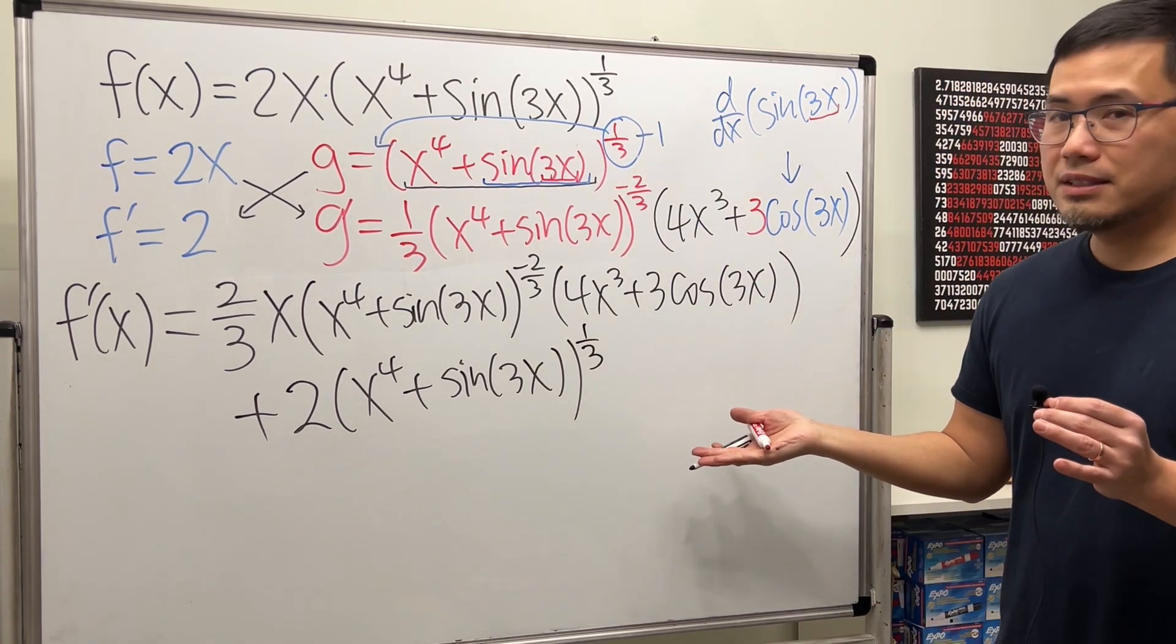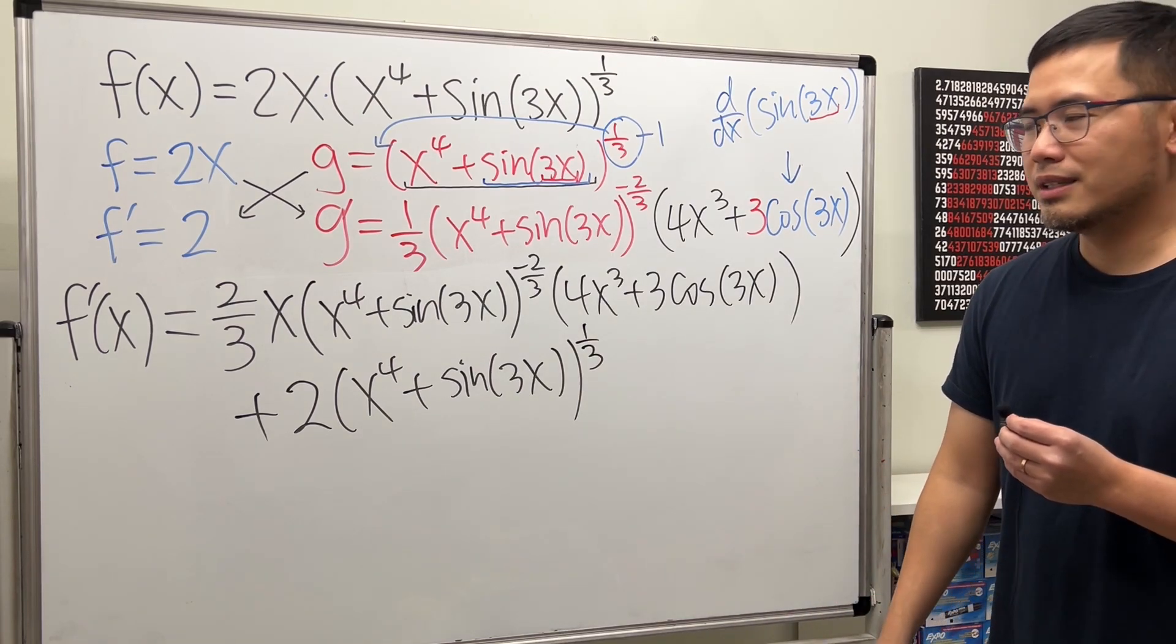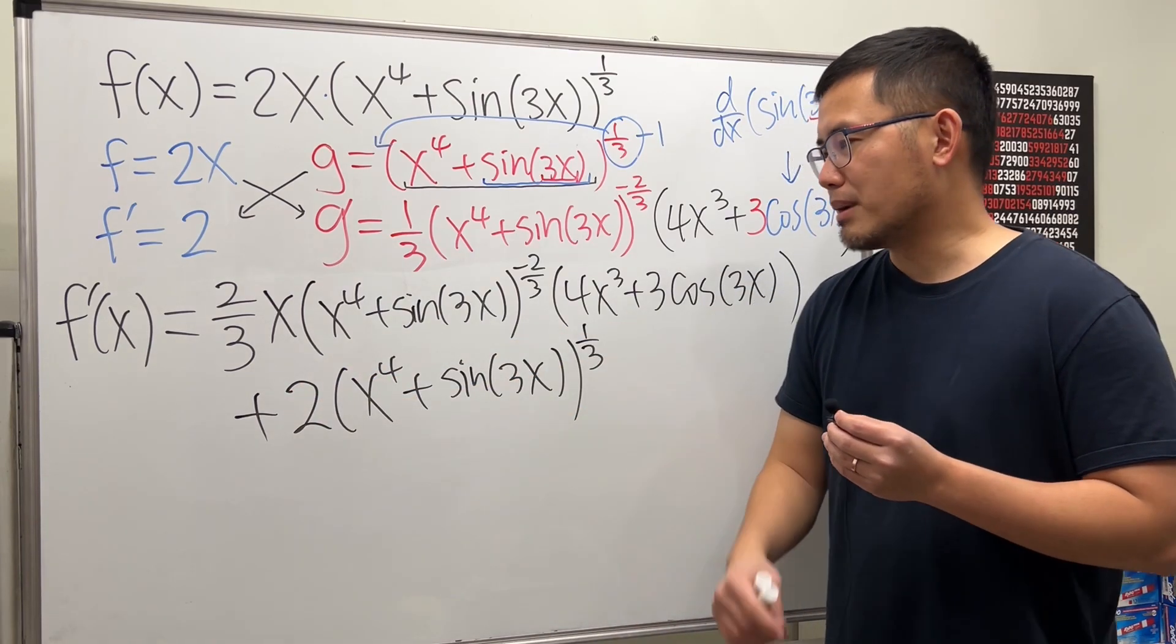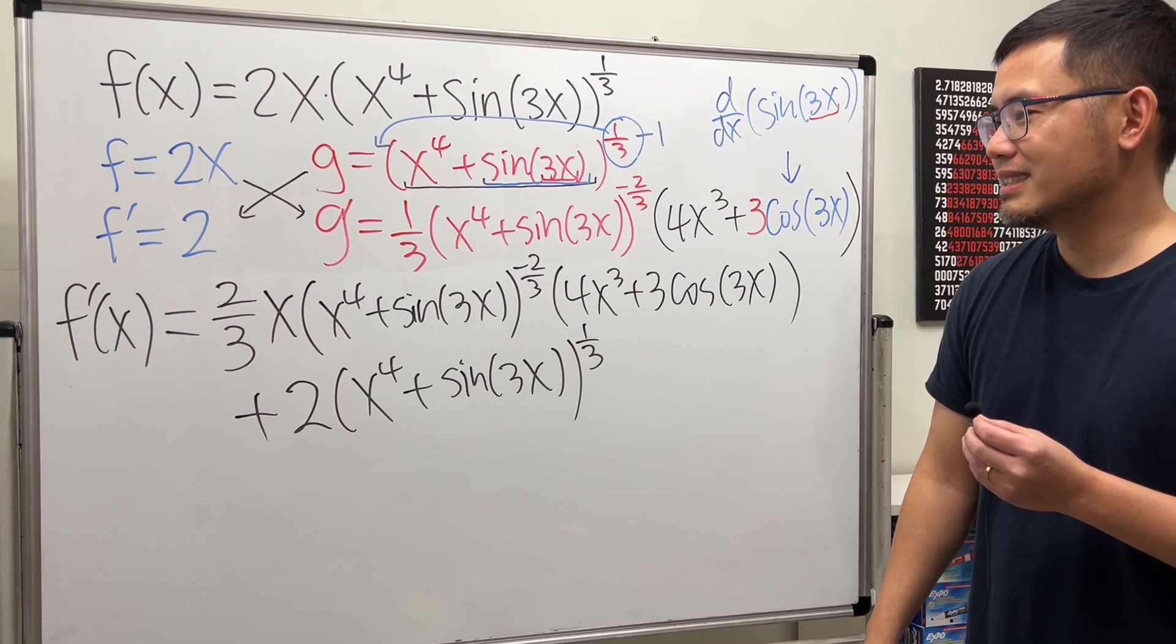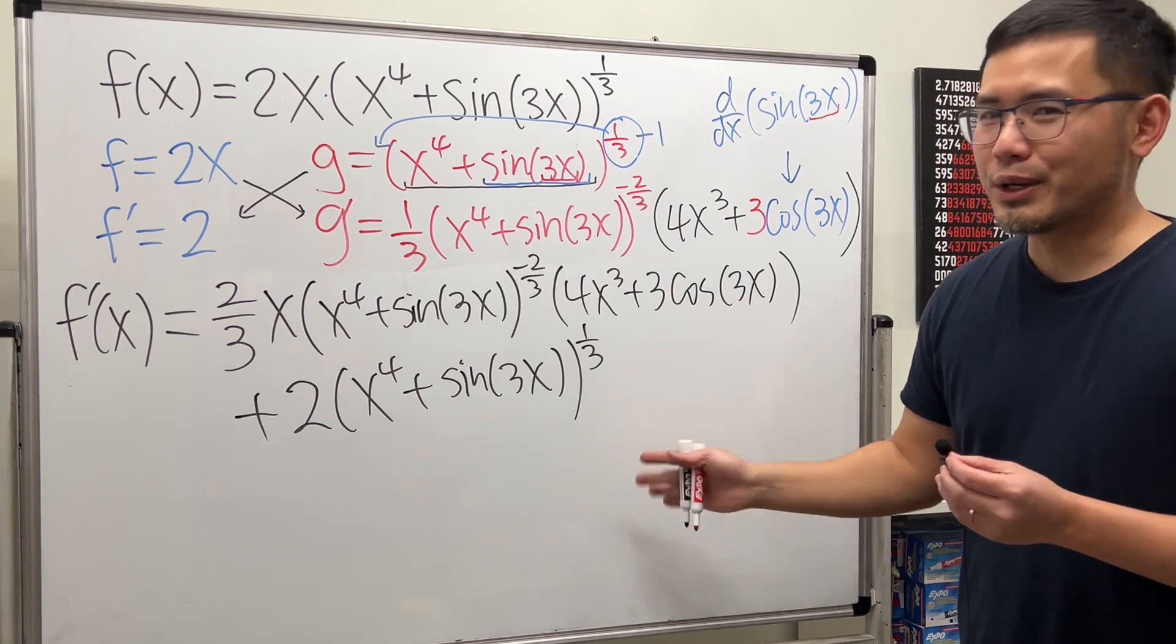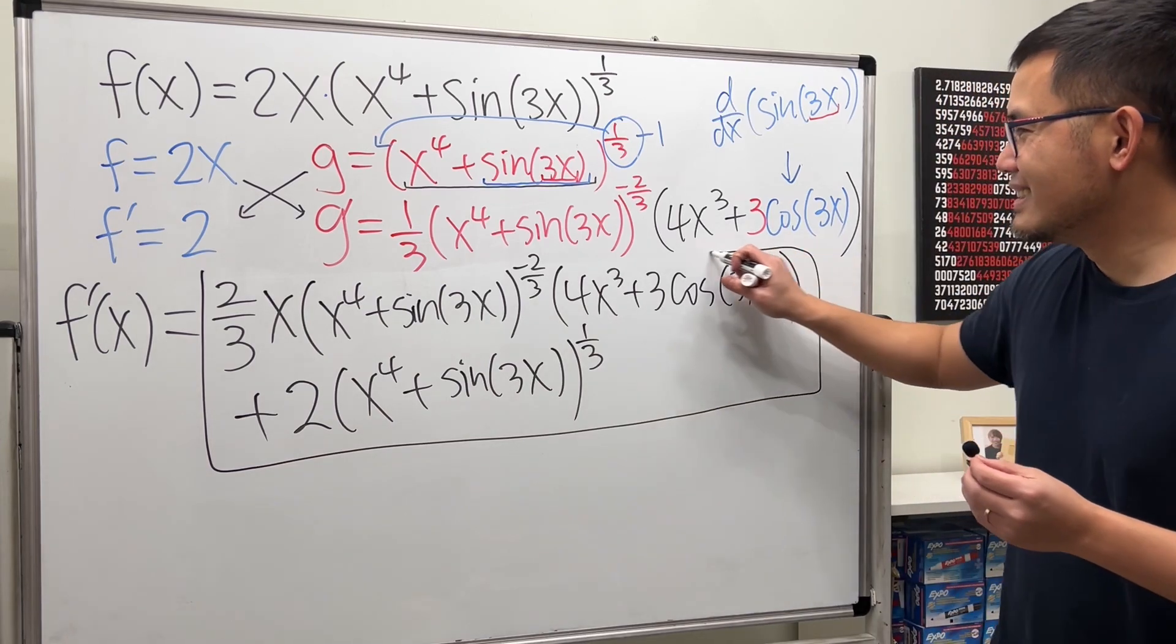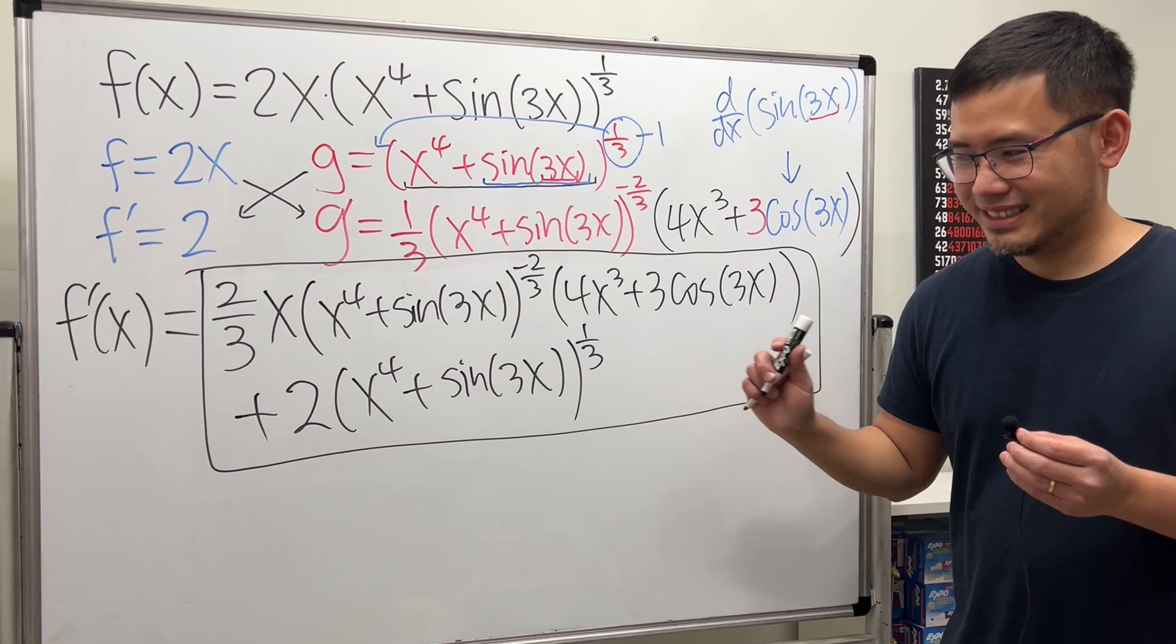So I believe this right here should be it. There's nothing much that we can do unless you can bring this down to the denominator and try to combine the fractions. But it depends on how your teacher wants you to do it. I think this right here should be a fair answer. So let's go ahead and box this. And I hope this right here helps. That's it.